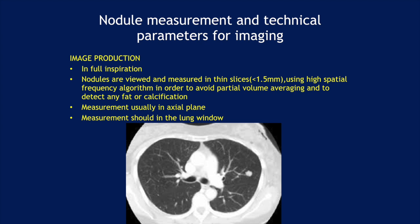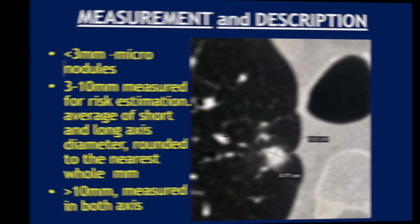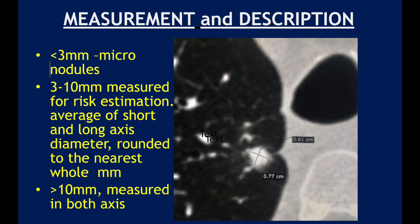Let us look at nodule measurement and technical parameters of imaging. Images must be in full inspiration. Nodules are viewed and measured in thin slices less than 1.5 millimeters using a high spatial frequency algorithm, in order to avoid partial volume averaging and to detect any fat or calcification. Measurements are usually done in the axial plane, and the accuracy of measurement is greater in the lung window. Anything less than 3 millimeters is called a micronodule — these need not be measured at all.